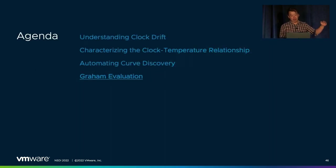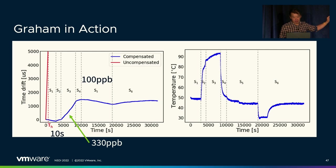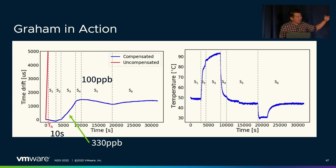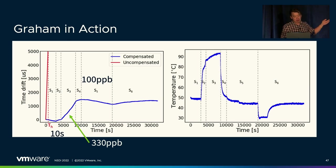Using our generated temperature curves, we're able to quantify the benefits of our compensation scheme. At time 0, we shut off synchronization. The graph on the left shows the time drift resulting from the system being exposed to a temperature trace representative of HVAC overheating. Without compensation — shown by the solid red line — it rises really quickly to almost five milliseconds of drift within 10 seconds, while Graham only exceeds one microsecond of drift at that same point. For most of the tests, we maintain about 100 ppb of error, which is roughly 200 times better than the advertised temperature error on the crystal.